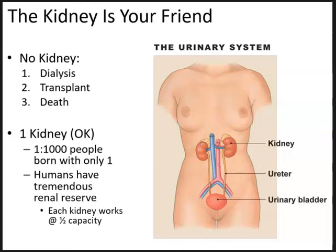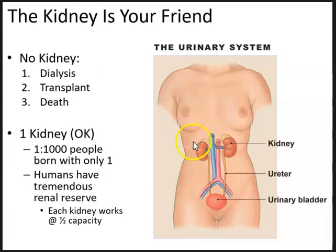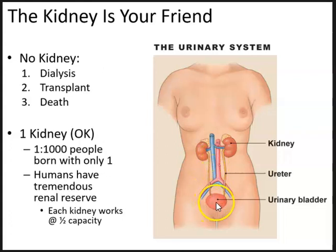So just a little review of the components of the urinary system. There are two kidneys, right and left, the right kidney being a little bit lower than the left kidney because we have the right lobe of the liver kind of pushing down on the right kidney. There are then two ureters where urine is transported once it's formed in the kidney. The urine will go down the ureters into the urinary bladder and urine will be transported outside of the body by the urethra.